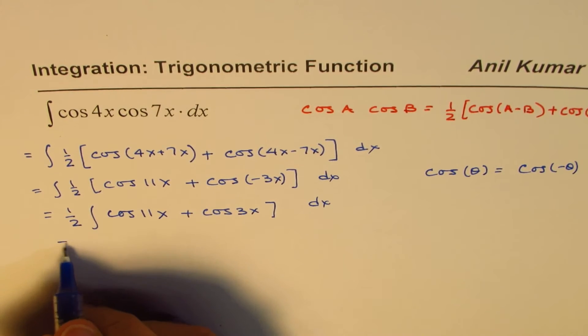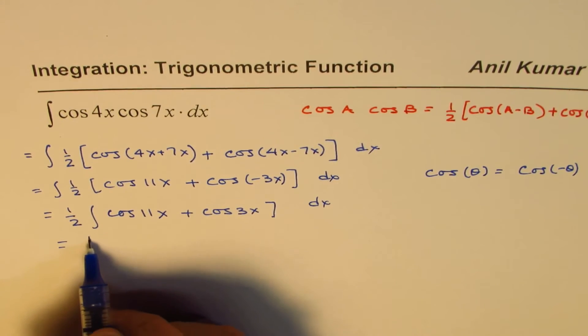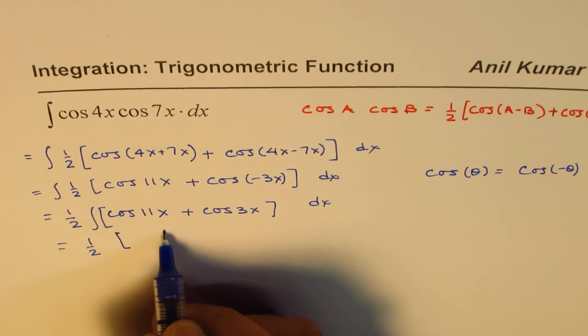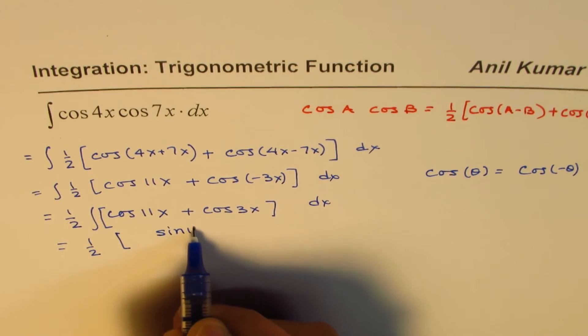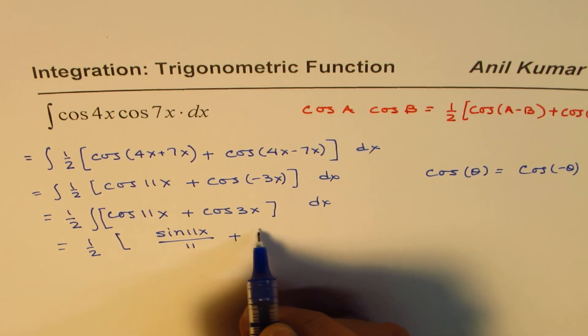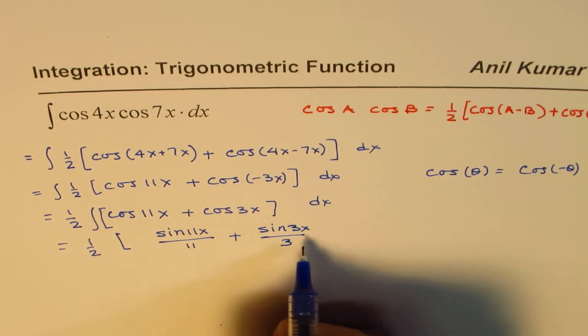So now we can find the integral. Half integral of cos 11x will be sin 11x divided by 11 plus that of cos 3x will be sin 3x divided by 3 plus c.